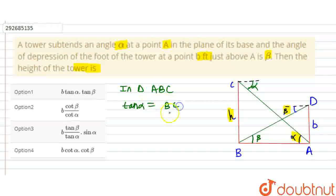In triangle ABC, tan alpha equals BC upon AB. BC is H and AB is AB. So from here we get H upon AB equals tan alpha. So the value of AB is H upon tan alpha.